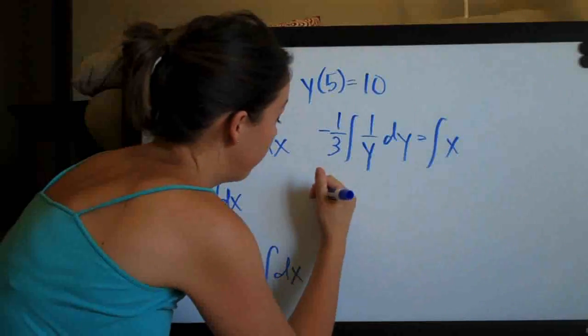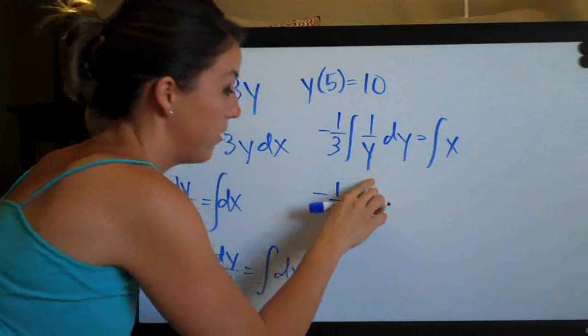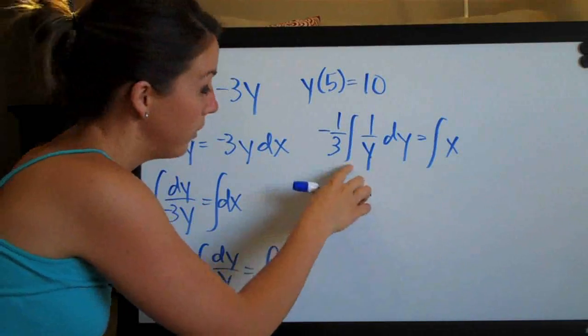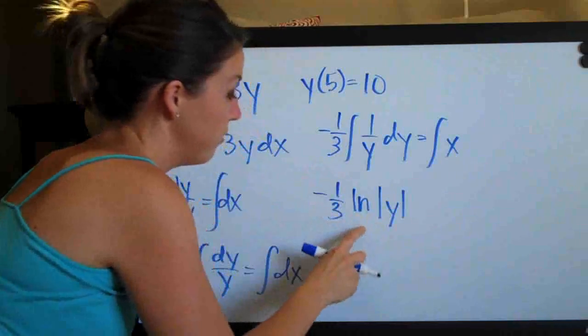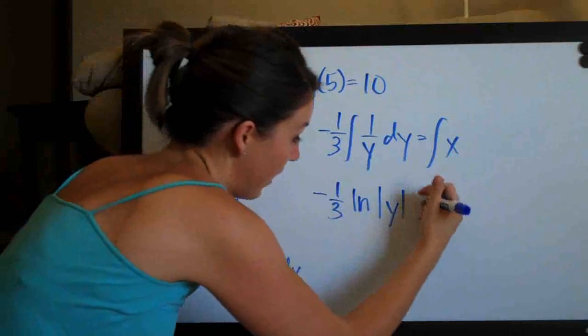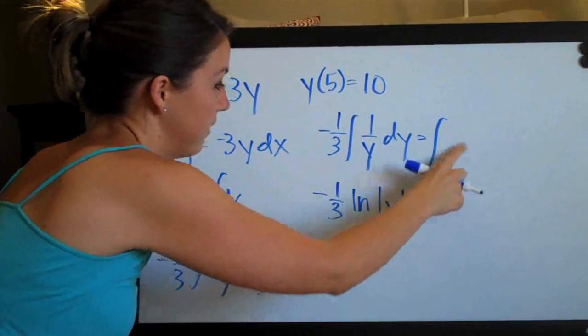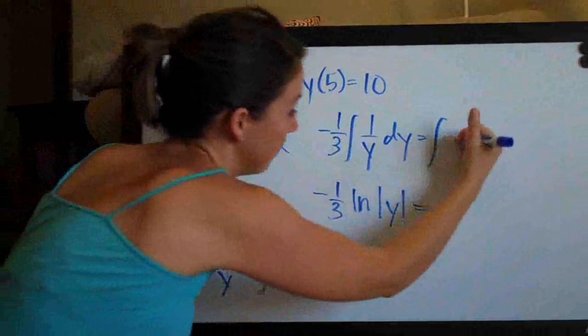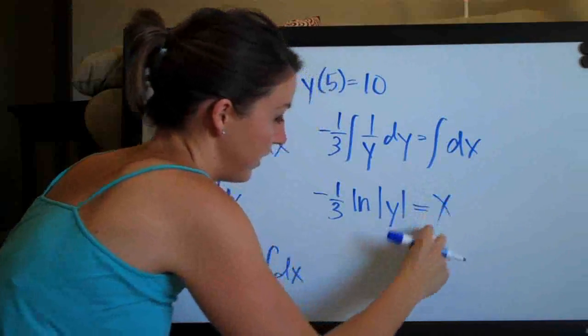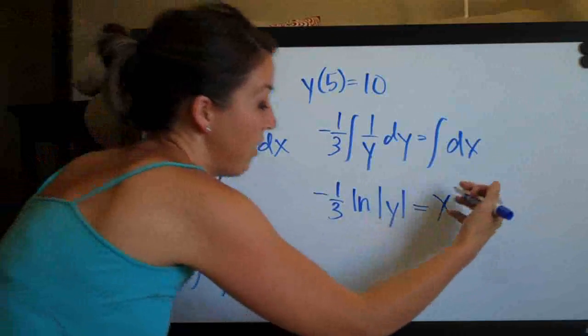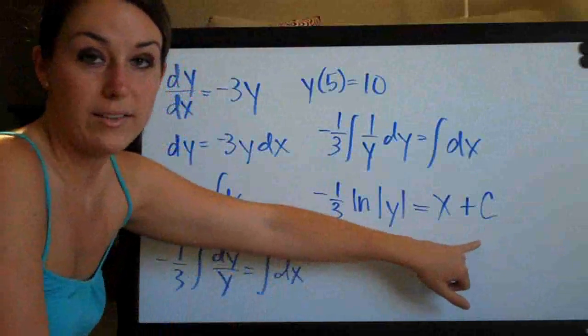And integrating the left side will give us this negative 1/3 times the integral of 1 over a variable is natural log or ln of the absolute value of that variable. So ln of the absolute value of y equals the integral, sorry this is not x, this is dx. The integral of dx is x. And then of course we have to add c to the right side. We only add c to the right side.